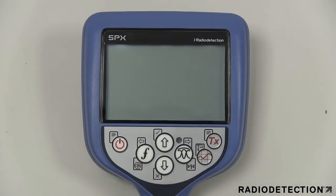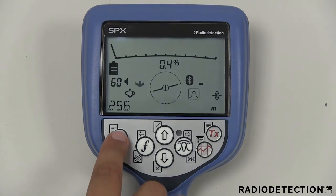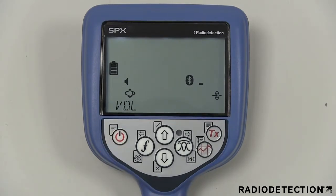Firstly, ensure the locator is switched on by pressing the power key for 2 seconds. To navigate the locator menu, press the power key briefly to enter the menu.